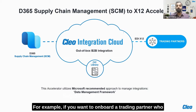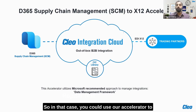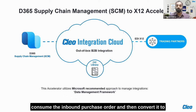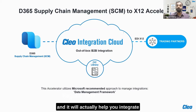For example, if you want to onboard a trading partner who would send a purchase order in the EDI 850 format, you could use this accelerator to consume the inbound purchase order and then convert it to a sales order in your Dynamics D365 ERP. This is what the accelerator does — it will help you integrate with all the partners who are using EDI.